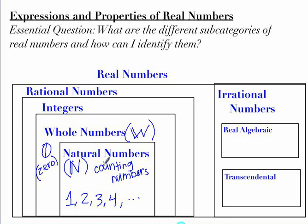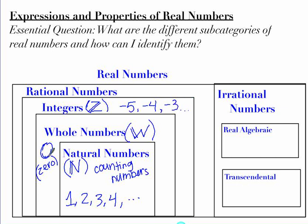Whole numbers are any natural number plus the number zero. The next set is integers. The symbol for integers is a Z with two little lines. Integers contain all the whole numbers and all the natural numbers, and also their opposites — so negative five, negative four, negative three, and so on. It contains all the negatives, plus zero, plus any of those whole or natural numbers.